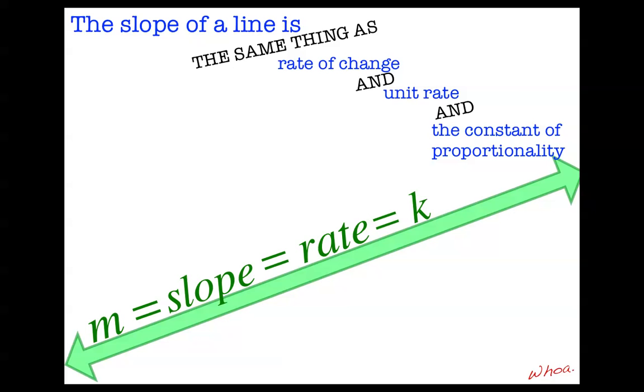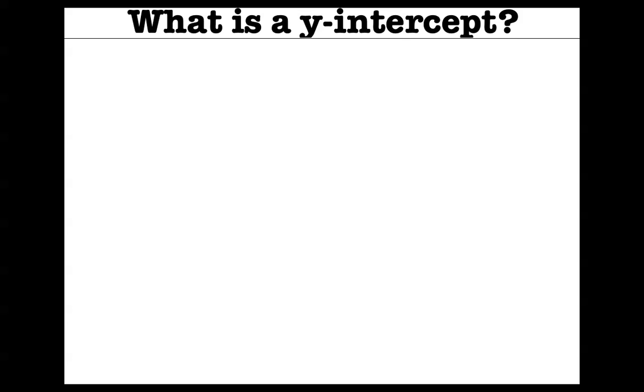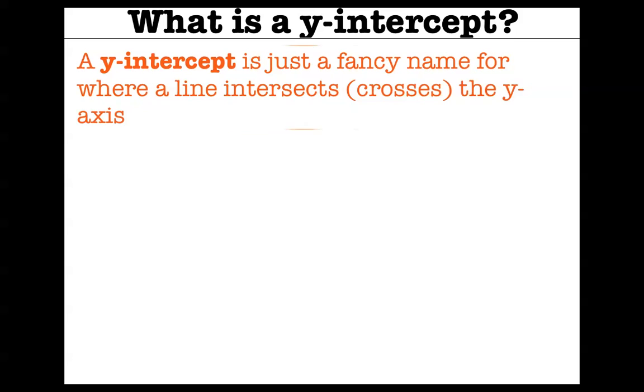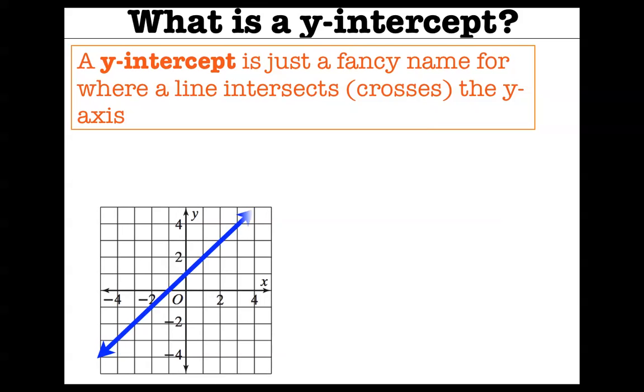Okay. Now I want to talk to you about intercepts, specifically something called a y-intercept. A y-intercept is just a fancy name for the place where a line intersects or crosses the y-axis. So if you have this blue line, the y-intercept of this line is 1. The reason is because the place where it crosses the y-axis is right here, and so that crosses the y-axis at 1.